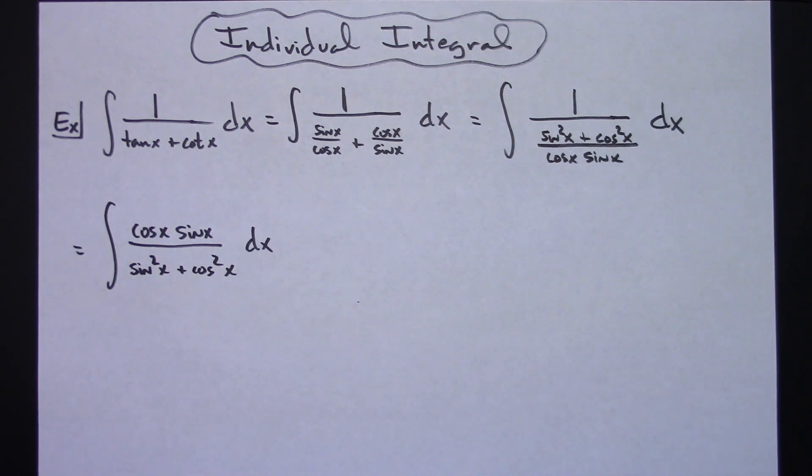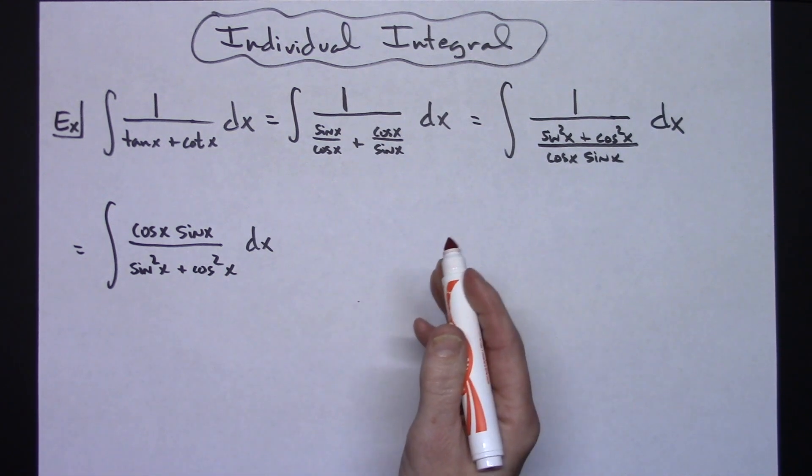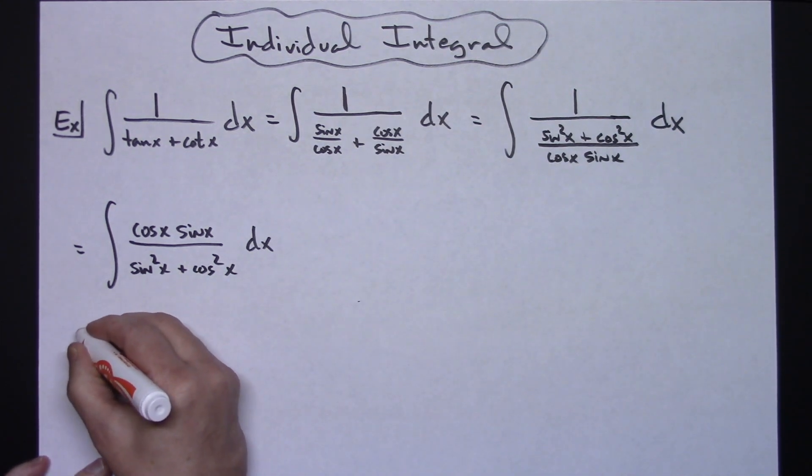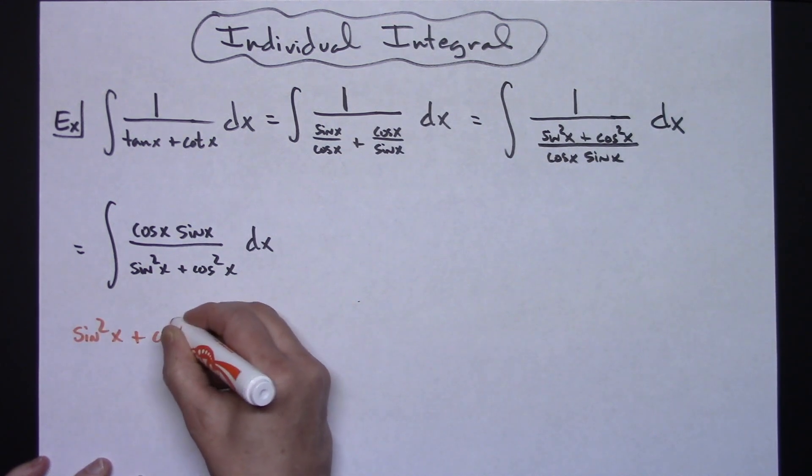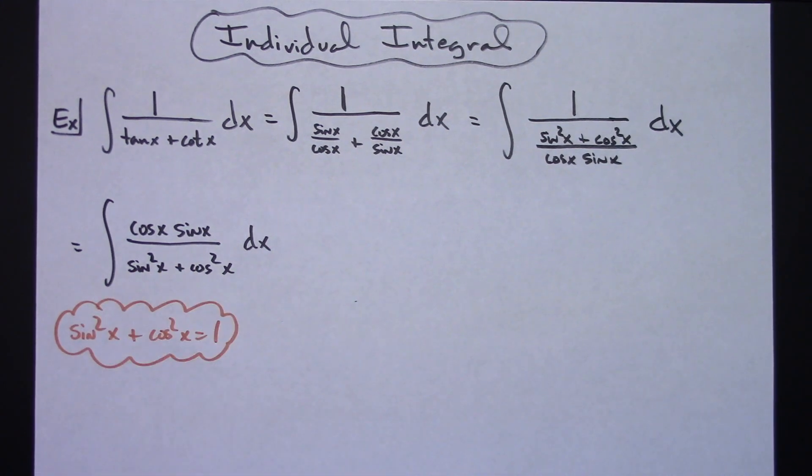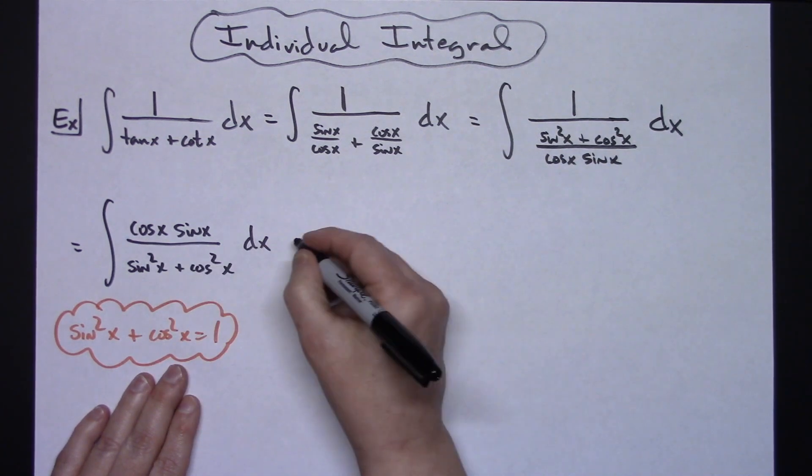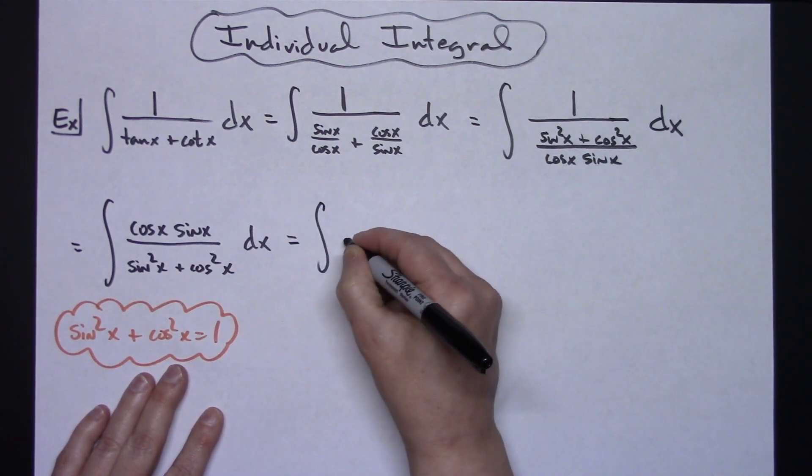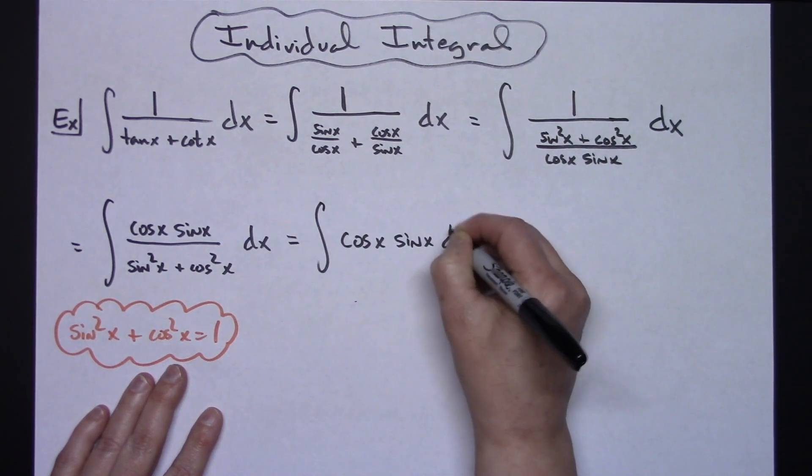Alright now hopefully at this point you recognize that this denominator here sine squared x plus cosine squared x that's a Pythagorean identity that we know is equal to 1. So sine squared x plus cosine squared x equals 1. Okay so hopefully you've got that in your book of tricks so we can replace that, put that over 1. Well as soon as I put that over 1 then really I just have the integral of cosine x and then sine x dx.